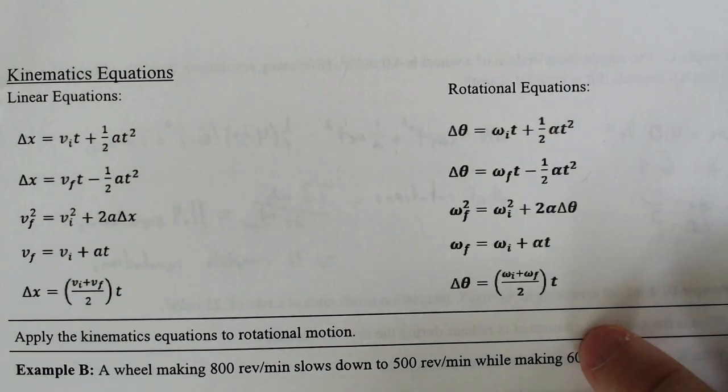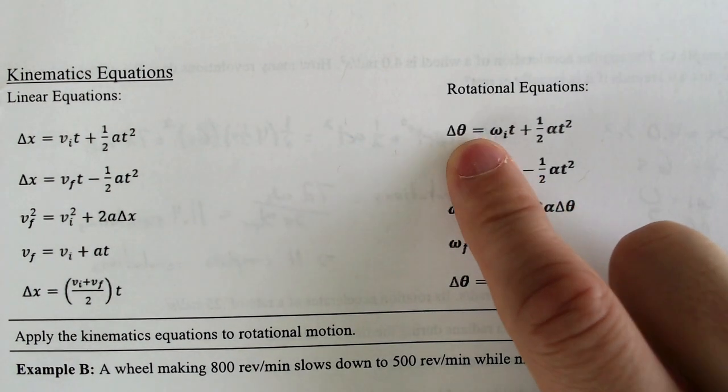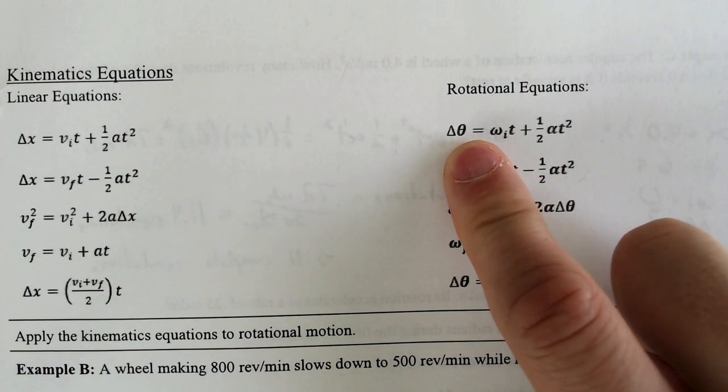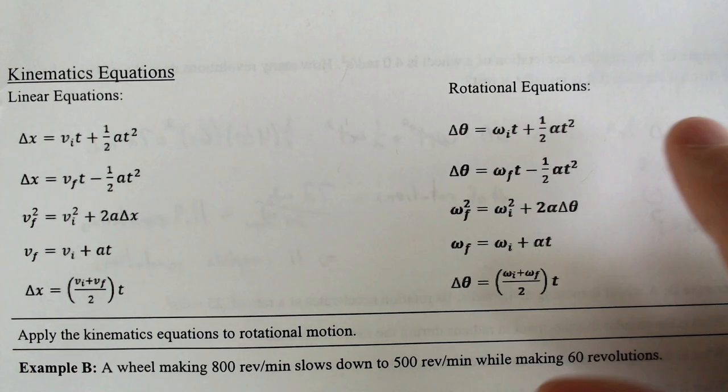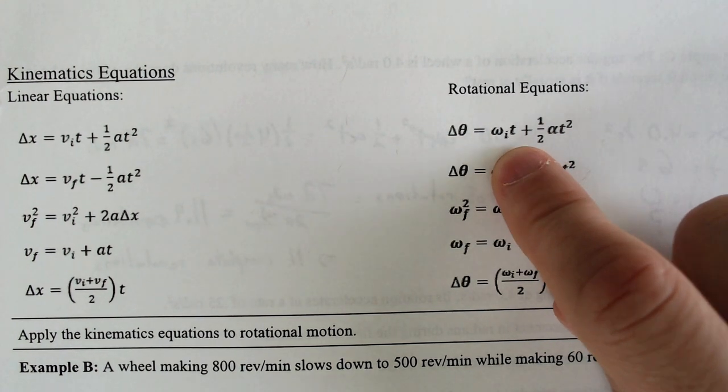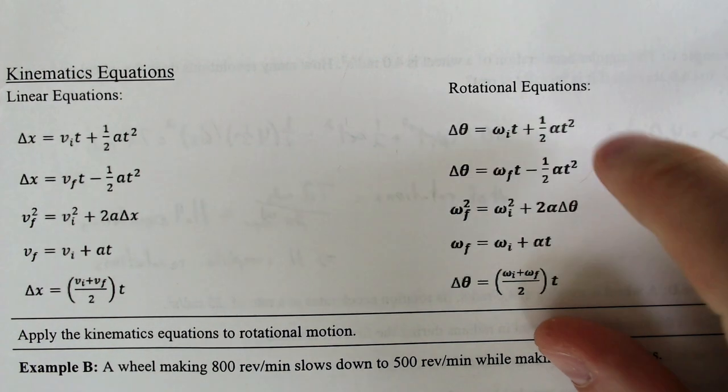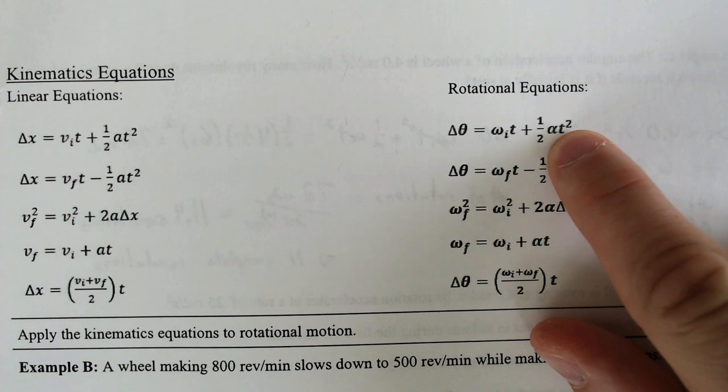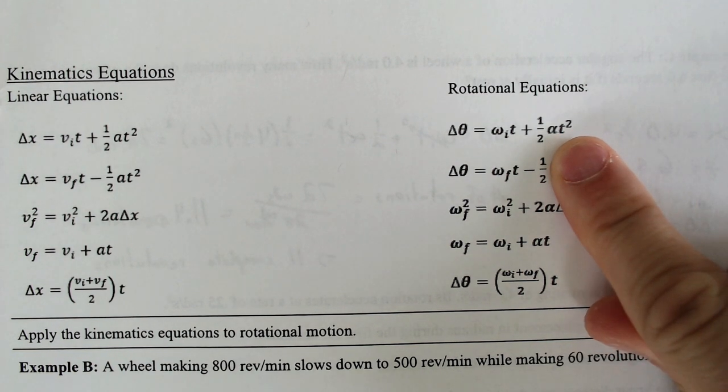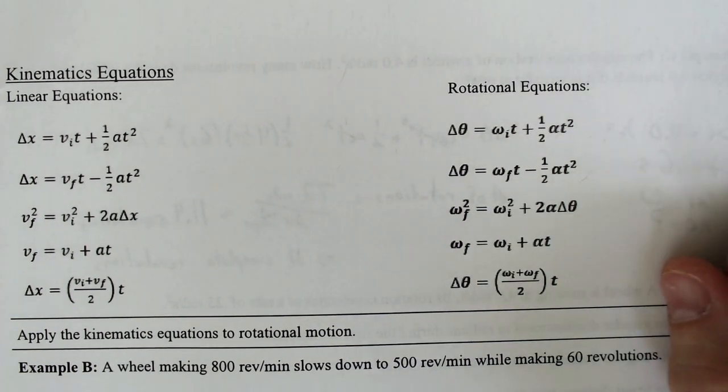As a quick review, so you know what everything is: theta is the change in angle, typically in terms of radians. The w is actually the velocity, the angular velocity, and that w symbol stands for omega. And then this thing that looks like an a is alpha, and it stands for the angular acceleration. T, of course, stands for time. And the i's and the f stand for initial and final.